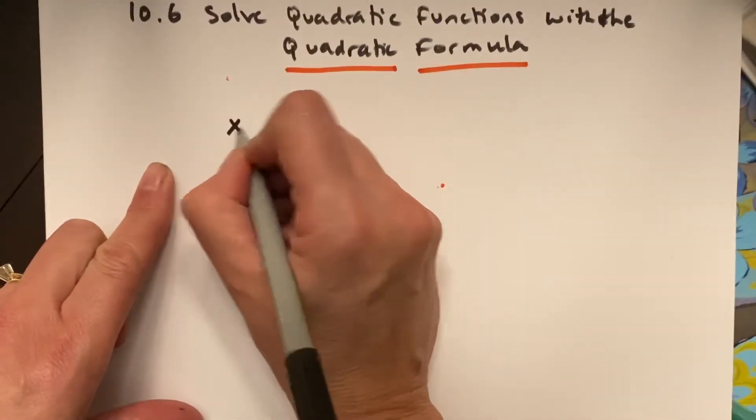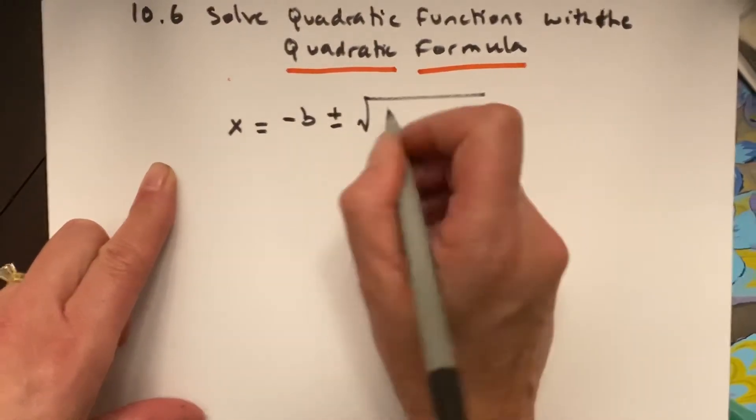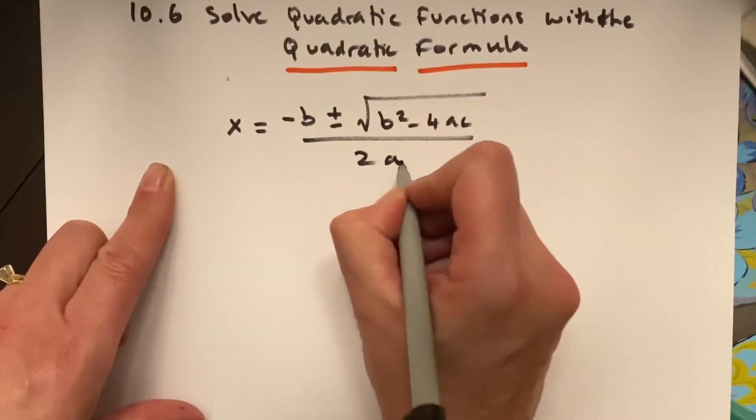So, x equals negative b plus or minus the square root of b squared minus 4ac over 2a.